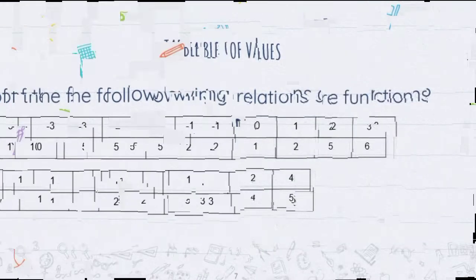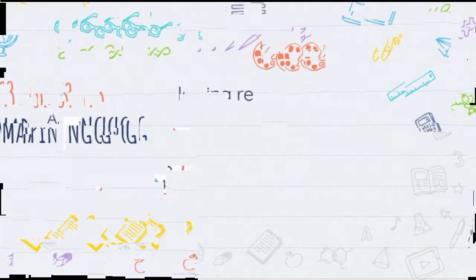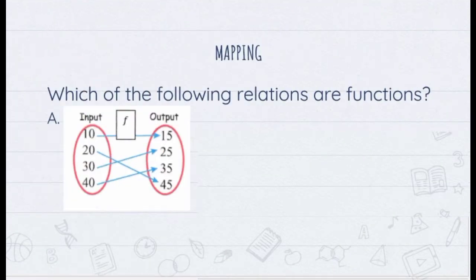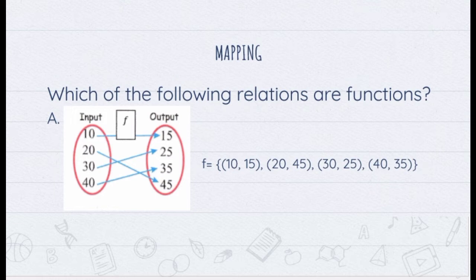Let us now consider number 3, mapping. This is a map of a relation with input x paired to output y. We will first make it into a set of ordered pairs. We have 10 paired to 15, 20 paired to 45, 30 paired to 25, and 40 paired to 35. All values of x here are non-repeating. Therefore, this is a function.